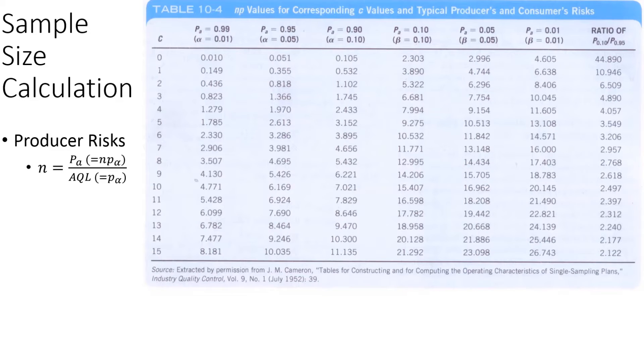To calculate sample size in an acceptance sampling plan, it is done in three ways. Number one is based on the producer risk alpha. As we know, alpha is the producer risk or type 1 error, based on alpha value, and typically it is 0.05.